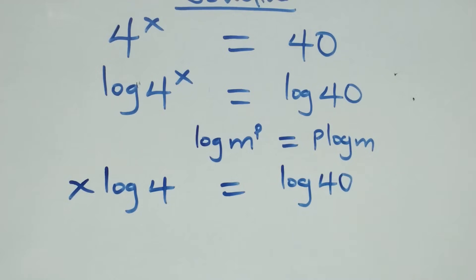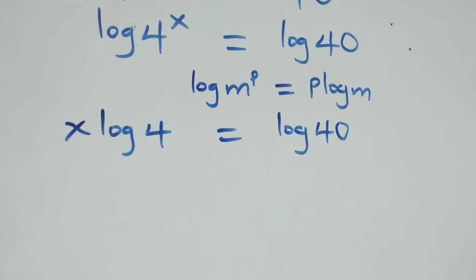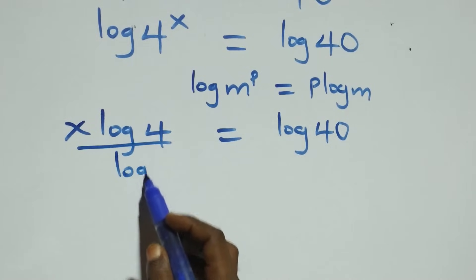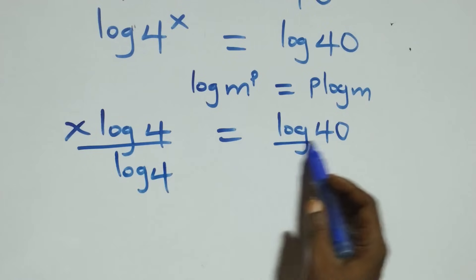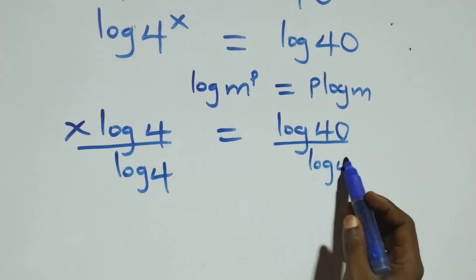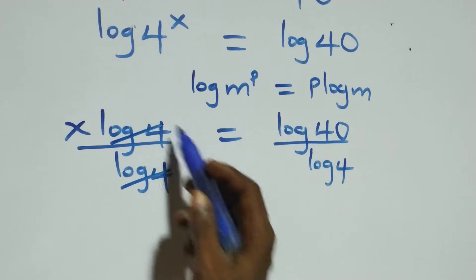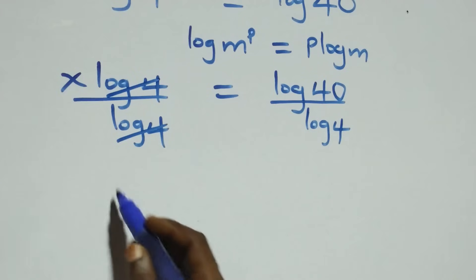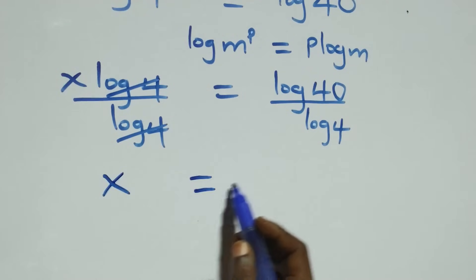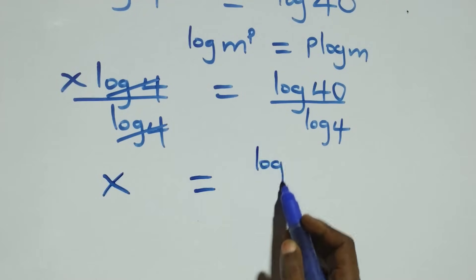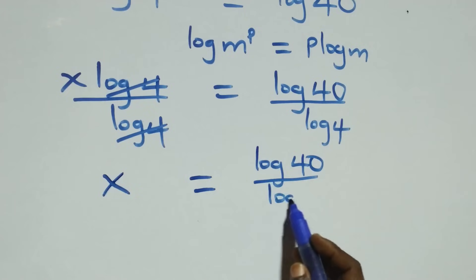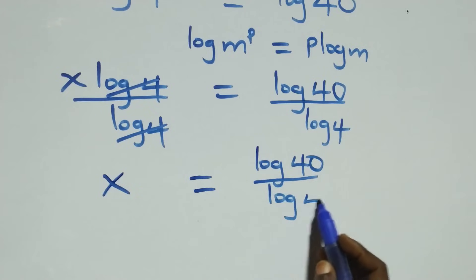The next step is to divide both sides by log 4. Log 4 cancels with each other and we have x left, which is equal to log 40 over log 4.